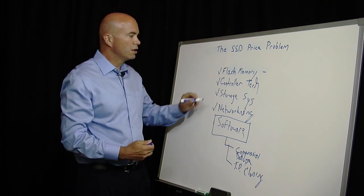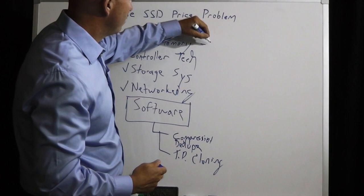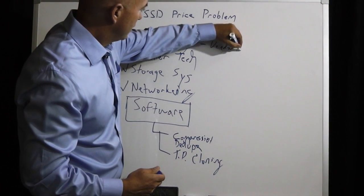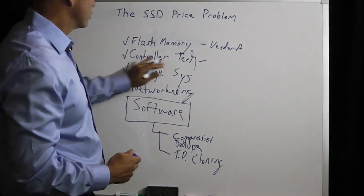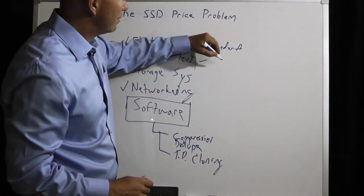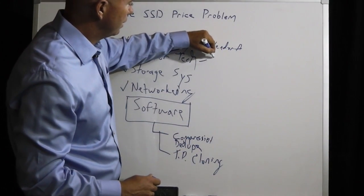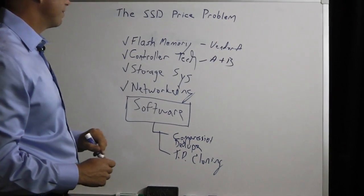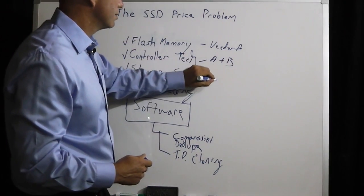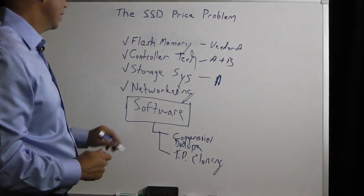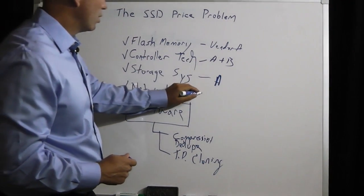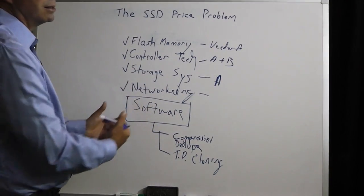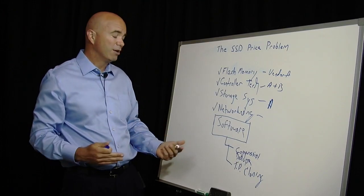The challenge, though, is the flash memory is created by somebody else. The controller technology may or may not be created by somebody else — it could be from that same vendor or a separate vendor altogether. The storage system is, of course, created by somebody else. And the networking is probably created by somebody else, embedded into the system or sometimes even an add-on. So that can add to the cost.